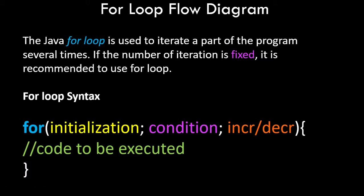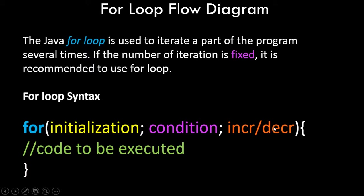The for loop will execute only till the condition is true. This condition plays a very important role, because if we give some wrong condition the for loop might execute for an infinite amount of time and that will crash your program. Then the code is executed and lastly the initialized variable is incremented or decremented depending upon our needs.